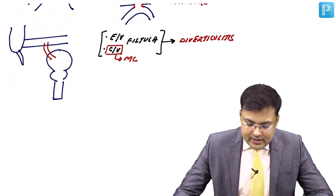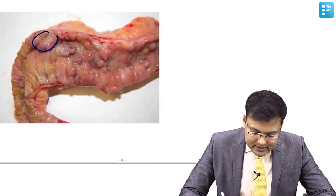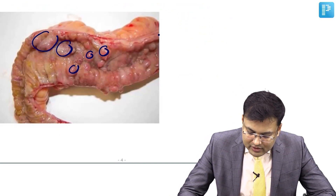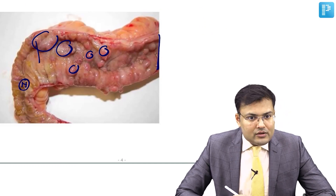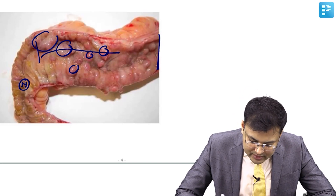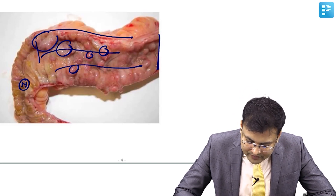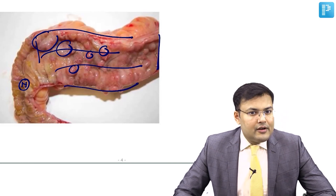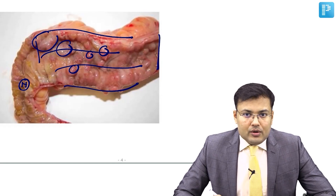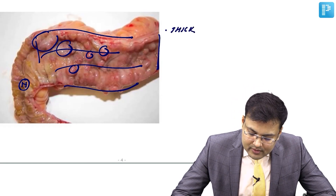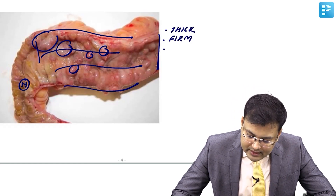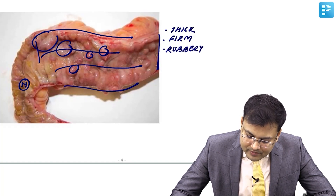Grossly, you can see the involved part of the bowel alongside the normal part — these are the skip lesions. The affected bowel wall is thick, firm, rubbery, and almost incompressible. This is a key gross pathological feature of Crohn's disease.